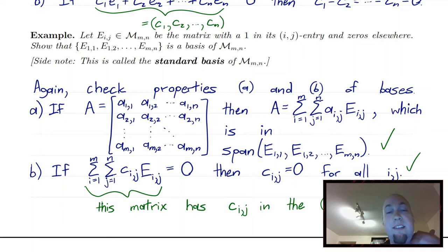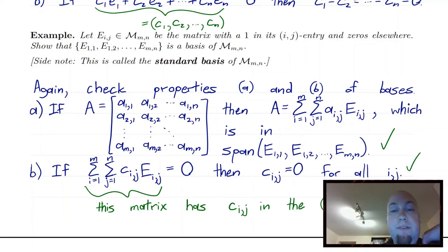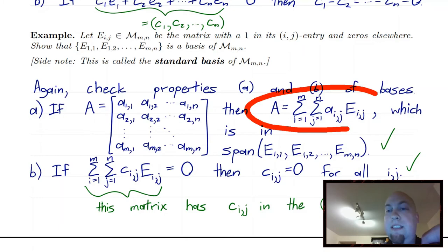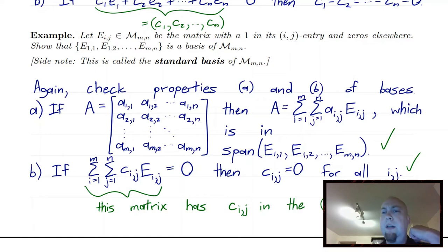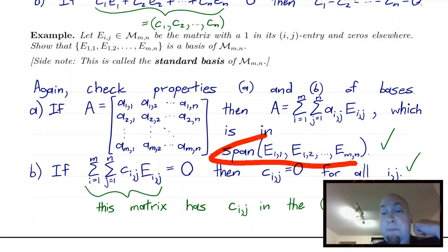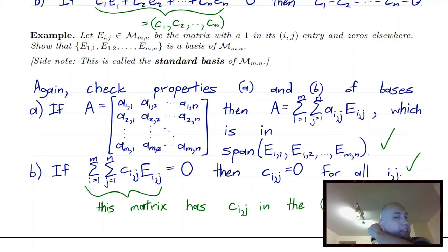To convince ourselves this actually is a basis, we have to check that it spans all of the m by n matrices and that it's a linearly independent set. For spanning, start with any matrix and show it's in the span of those basis vectors. You can write an arbitrary matrix as a double sum of scalars times standard basis matrices — the double sum arises because there are two indices to specify a matrix entry. This is a linear combination of those standard basis matrices, so by definition it's in their span. Spanning property satisfied.